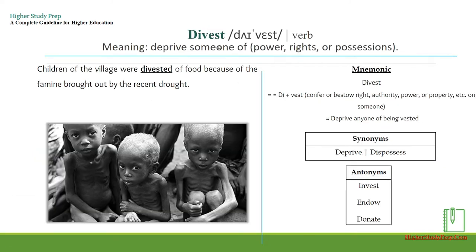'Divest' is a verb meaning to deprive someone of power, rights, or position. Example: children of the village were divested of food because of the famine brought on by the recent drought. The mnemonic: break it as 'die + vest,' where 'vest' means to confer or bestow rights, authority, or power — so 'die + vest' means to deprive anyone of being vested.